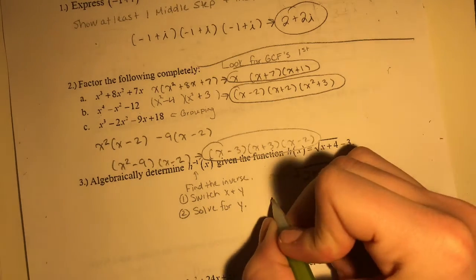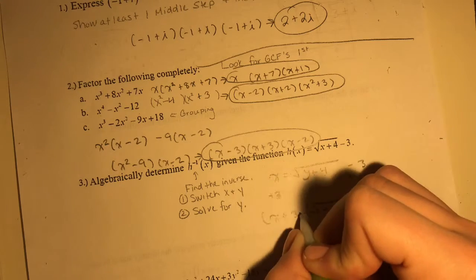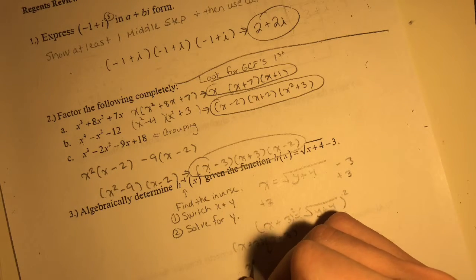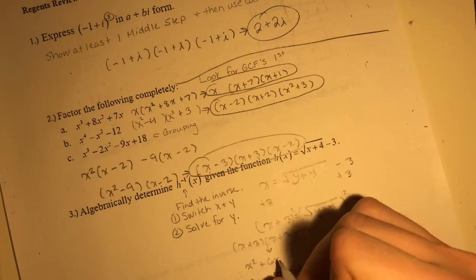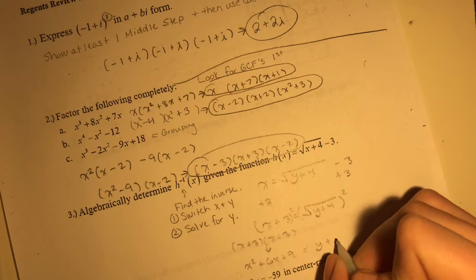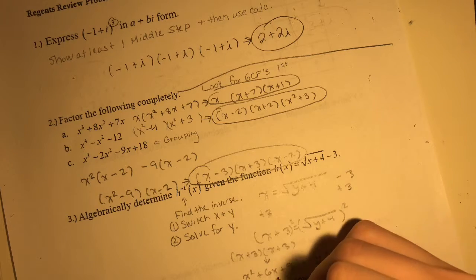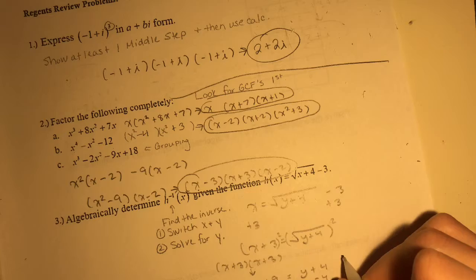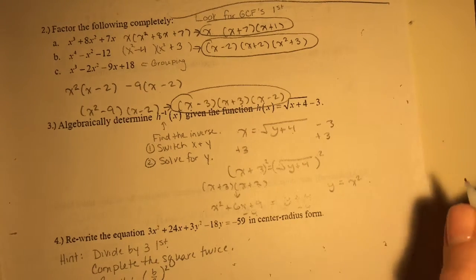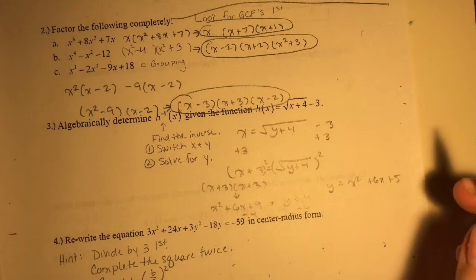So we're gonna add 3 on both sides. Let's get rid of the square root by squaring this. And we have y+4. Now let's bring that 4 onto the other side. This gives us y equals x²+6x+5. And beautifully done.